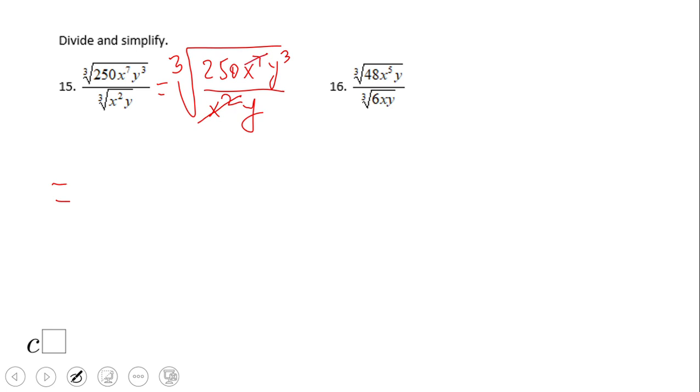All right, so this is maybe different than the other ones—they are not perfect cubes. So we can break it like we did before: 125 times 2, x to the third power times x squared. Don't forget it's a cubic root, and y squared.